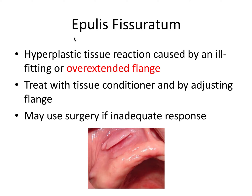Next is epulis fissuratum, which is hyperplastic tissue usually in the vestibule area — a reaction caused by an ill-fitting denture, especially an overextended flange. This is why it's important to understand vestibule depth and muscle attachment boundaries, because we can cause this hyperplastic tissue reaction if the denture flange extends too deep. Treatment involves a tissue conditioner and reducing the flange, with surgery as an option if there's an inadequate response.